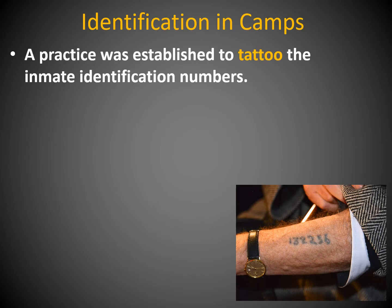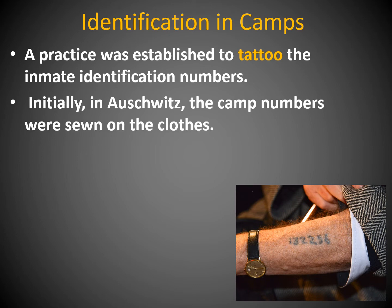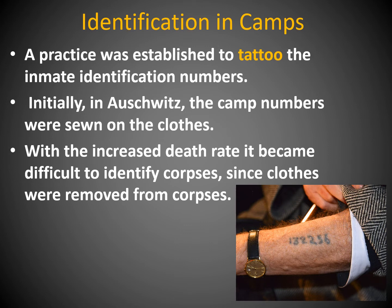A practice was established to tattoo identification numbers on the skin. As you see in this picture, that's how they kept track. Initially at Auschwitz, the camp numbers were sewn onto clothes, but they realized that wasn't efficient. With the increased death rate, it became difficult to identify corpses since clothes were removed before killing. So they gave prisoners a tattoo on their arm. This is the 1940s — not that long ago. We definitely had grandparents or great-grandparents who were alive during this time.